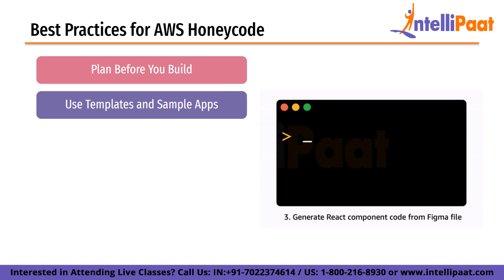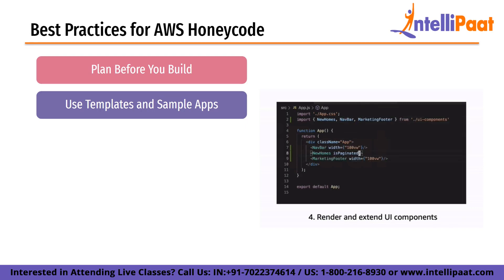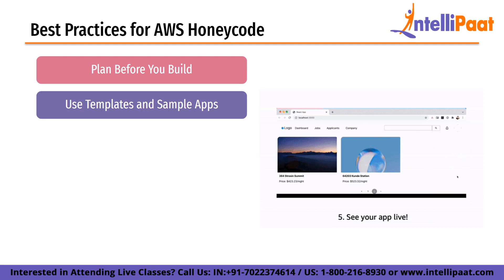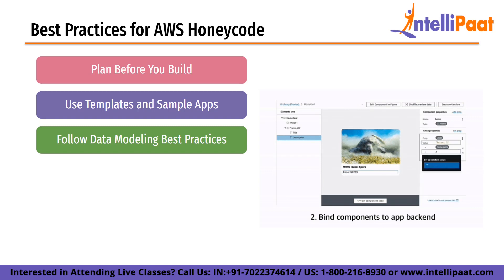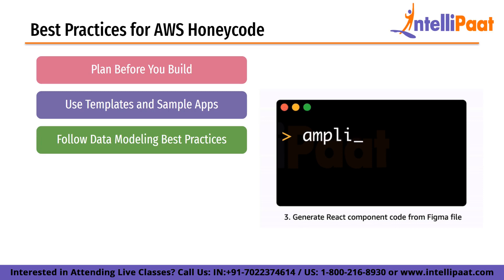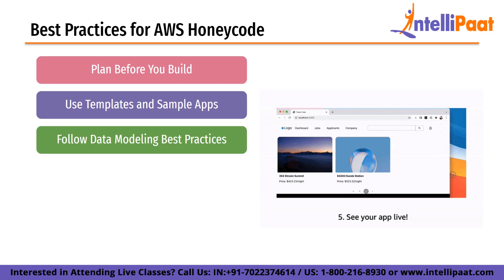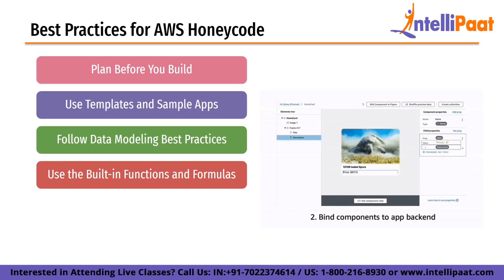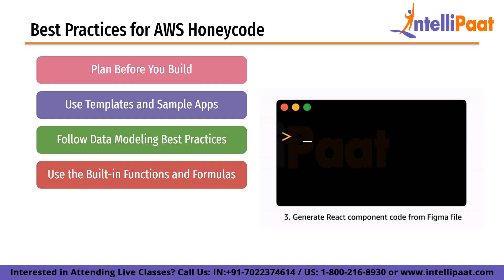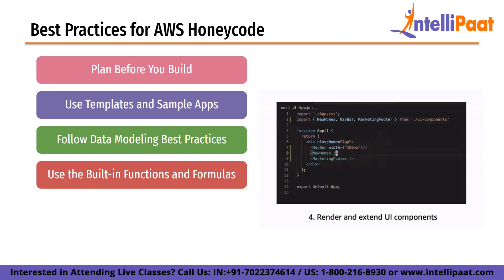Third, follow data modeling best practices. Data modeling is a critical aspect of app development in Honeycode. Best practices include defining clear relationships between tables, avoiding circular dependencies, and minimizing data redundancy. Next, use the built-in functions and formulas. Honeycode offers a range of built-in functions and formulas that can make app development easier and more efficient. These can be used to automate tasks, perform calculations, and validate data.